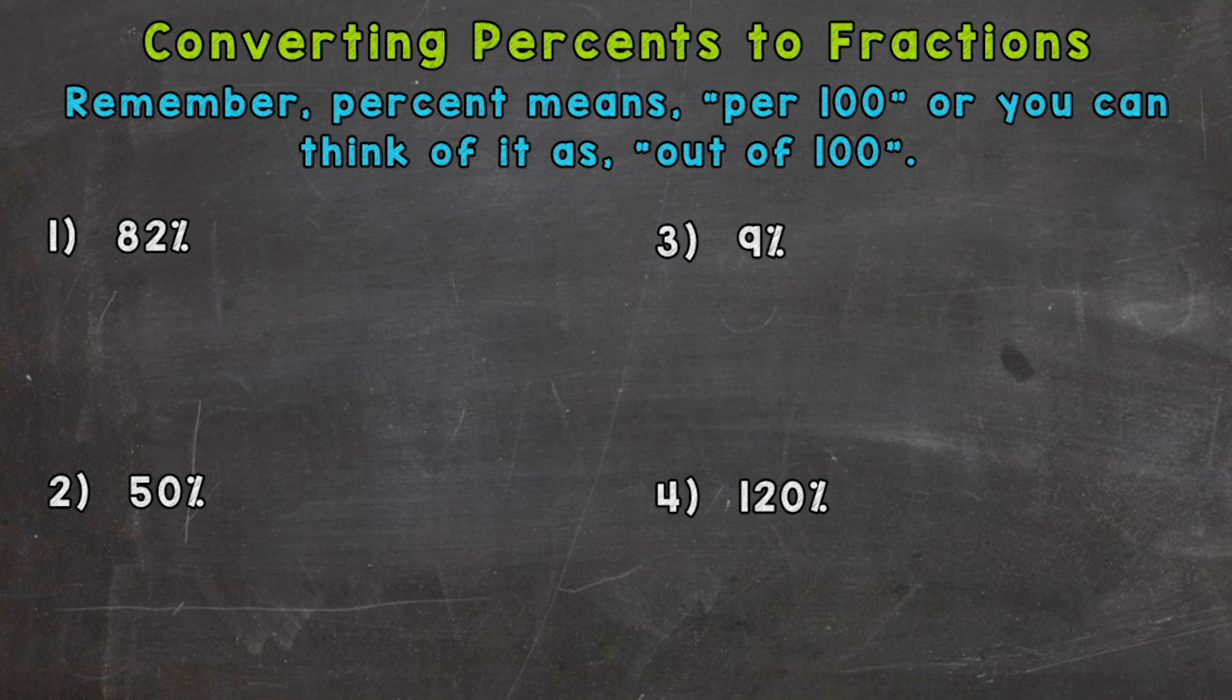So that means 82 out of 100, or 82 per 100. So our fraction would be 82 hundredths, or 82 over 100. That's how you convert a percent to a fraction. Now we can simplify that fraction.